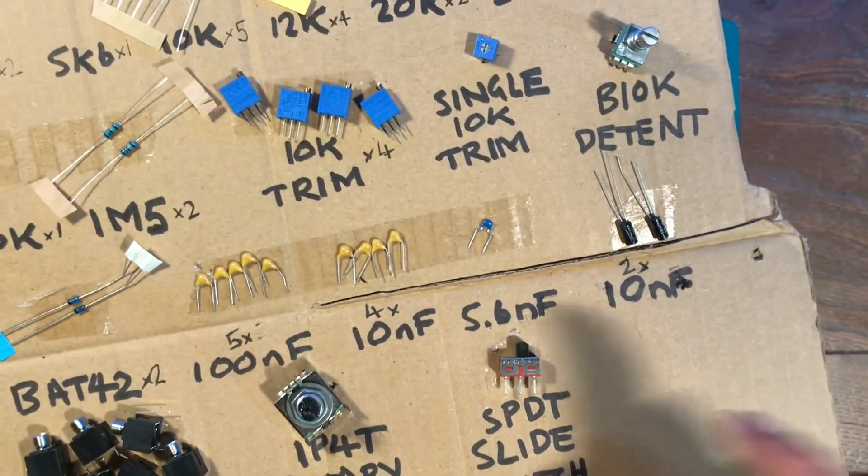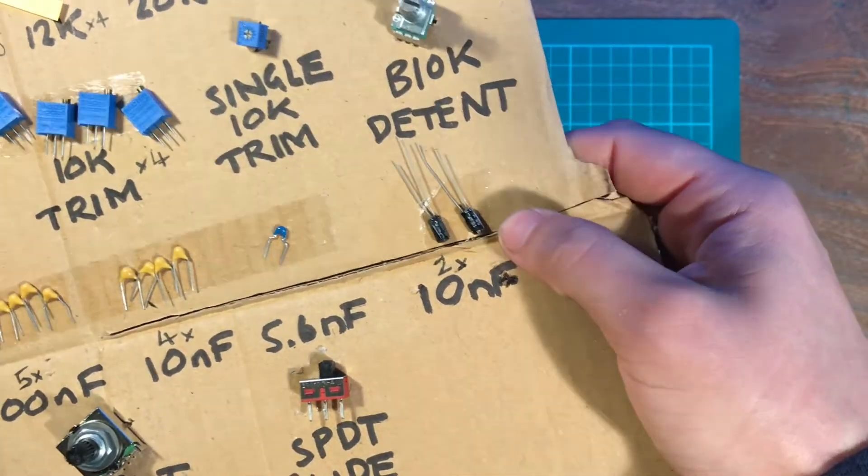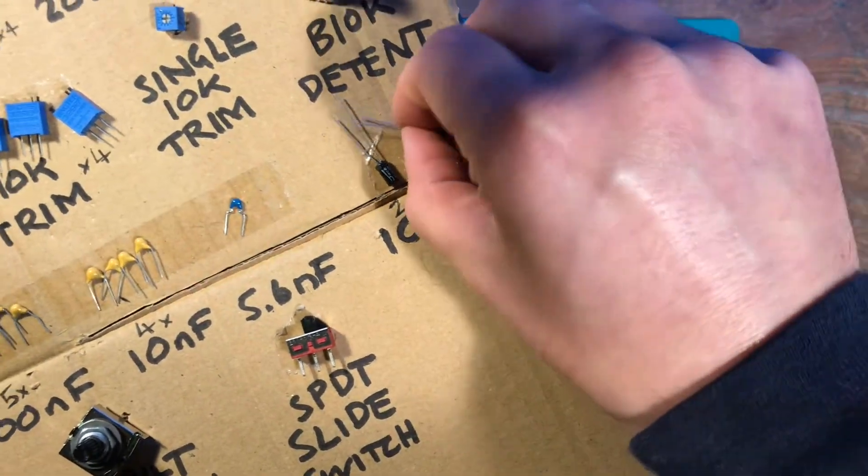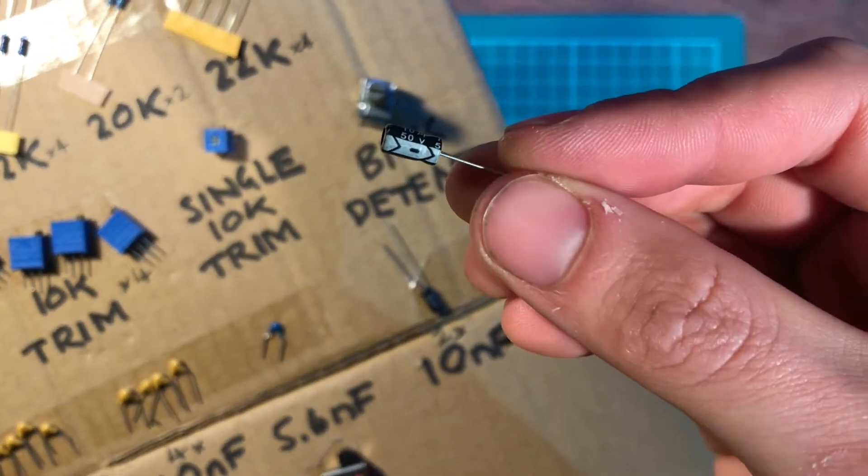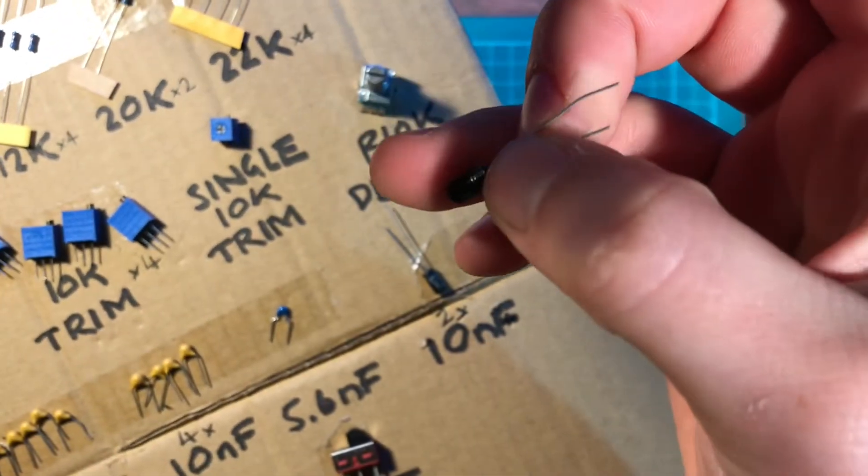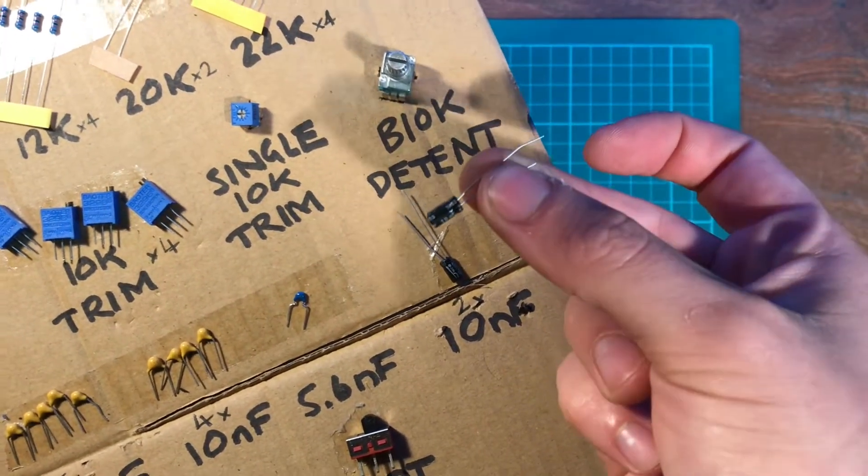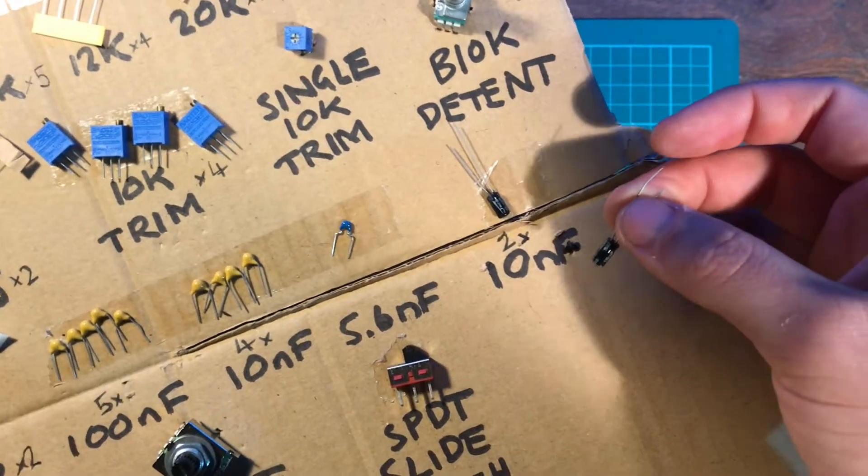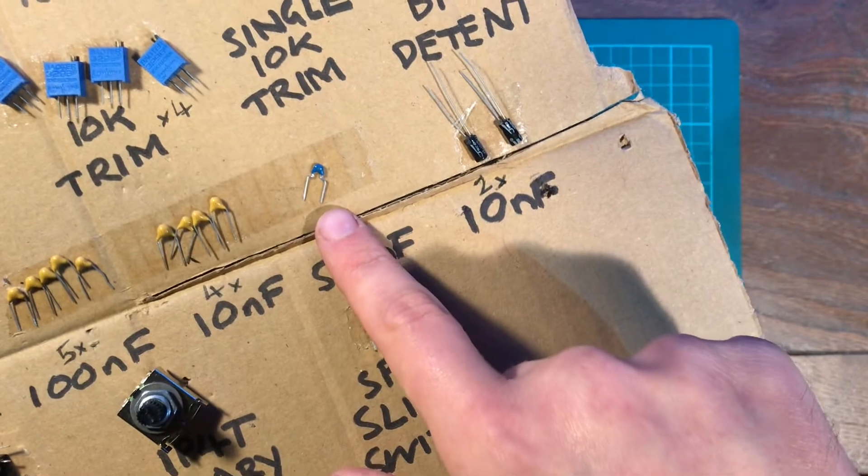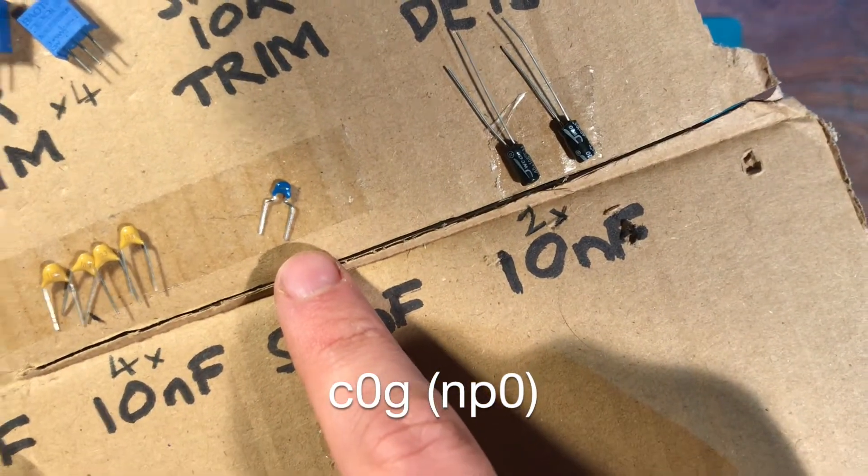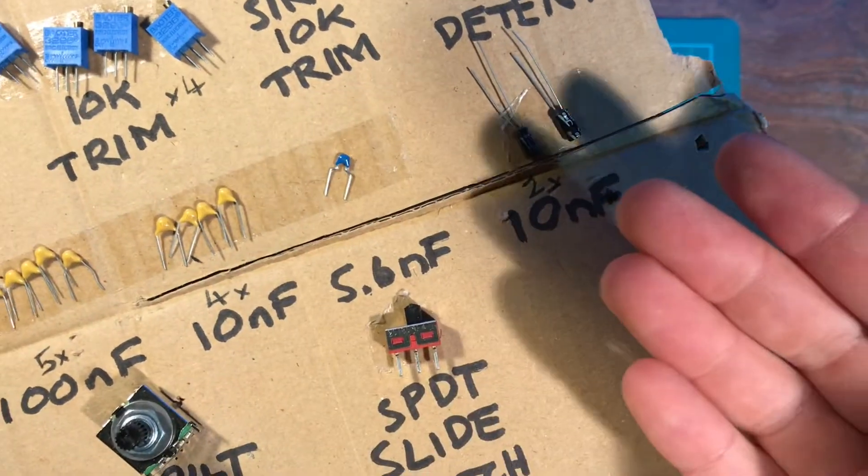Moving on to the capacitors. We've got ceramic ones here and electrolytic ones here. It's just a note on the electrolytic ones - they are polarized. You can see on here there's the negative side and then the positive side has the longer leg on the bottom. Make sure to get that the right way around. It's quite well labeled on the PCB. Also to note I spec a COG ceramic here just because it's more stable.